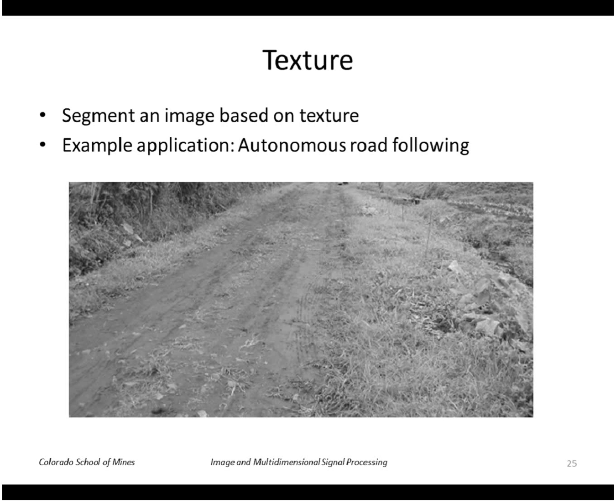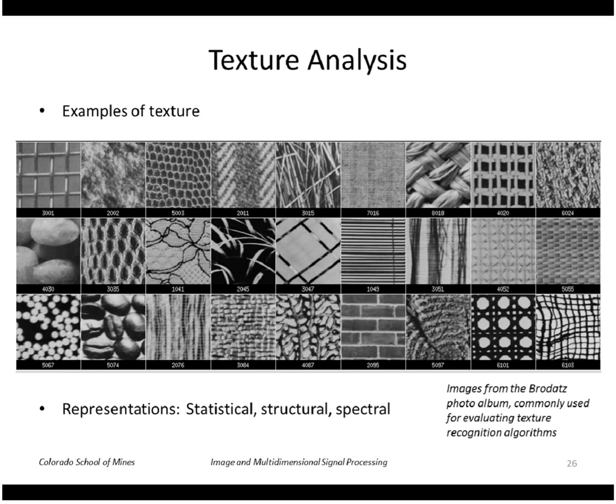Let's look at another way to describe regions, and that's based on texture. Texture is an important cue for recognition. An example of a natural scene like this, a dirt road. Humans can pretty easily see the difference between this region and this region based on texture. So one obviously is a dirt road, the other is grass. Here's some texture images from a texture photo album. And what we'll see is that we can look at statistical ways of describing texture, structural ways, or spectral ways.